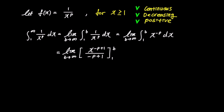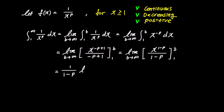Before substituting b and 1 for x, let's simplify negative p plus 1 to 1 minus p. Therefore, as b approaches infinity, the expression becomes the limit of x to the power of 1 minus p over 1 minus p. The denominator of 1 minus p is a constant, so it can be factored out, resulting in 1 over 1 minus p times the limit of x to the power of 1 minus p as b approaches infinity.